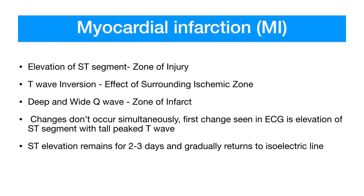When an infarct occurs, the first change to appear is elevation of the ST segment with tall peaked T waves, which appears within minutes to hours. This means an ECG taken immediately after onset of chest pain may appear normal and must be repeated after a few hours if myocardial infarction is clinically suspected. The elevated ST segment remains elevated for two to three days and gradually returns to the isoelectric line within one to two weeks.